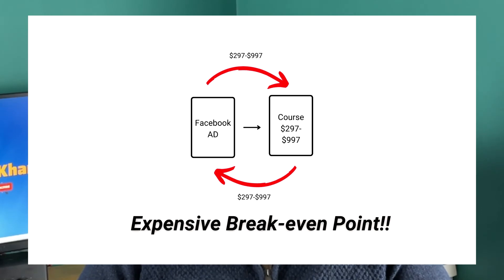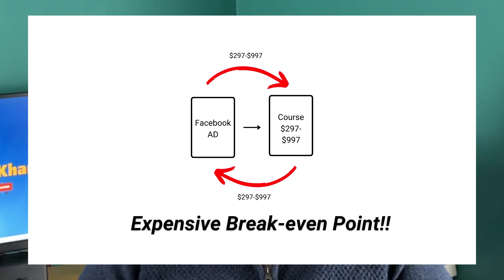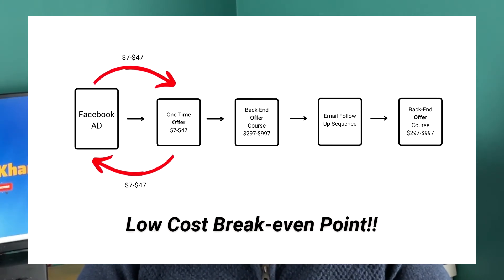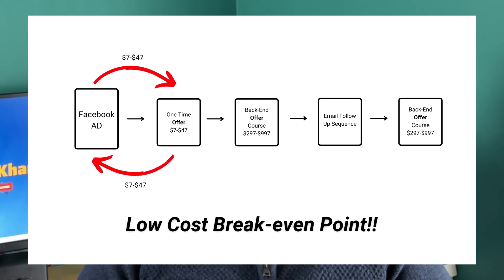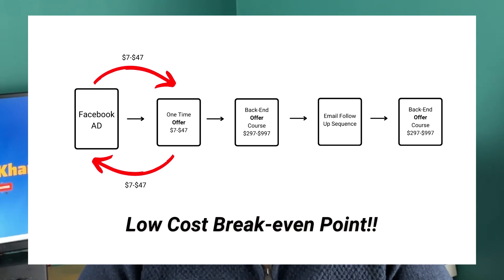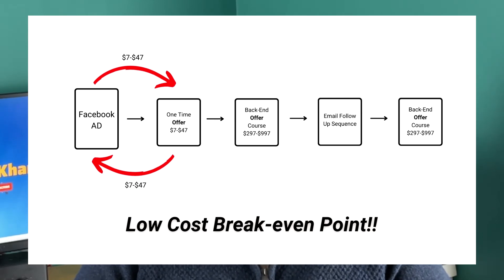I would advise against selling straight to a big price offer such as $497. Instead, take that offer and put it at the upsell or the back end. Find a part of this escape-and-arrival framework and sell something that moves them a step closer at a smaller price — such as $7, $27, or even $47. Because your goal when running ads should never be about trying to make profit; it's always to break even on ad spend and then make your profit on the back end.